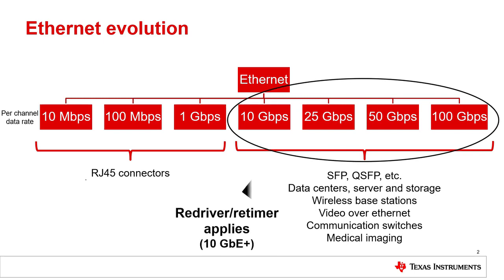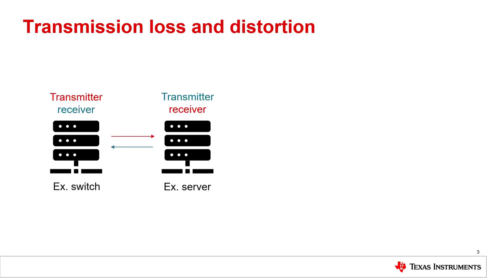These higher data rates require Redriver and Retimer Signal Conditioners to improve signal quality and establish robust communication in applications such as data centers, server and storage, wireless base stations, video over Ethernet, communication switches, and medical imaging, to name a few. The high-speed signals can suffer severe degradation at multi-gigabit data rates when traversing through PCBs, connectors, and cables.